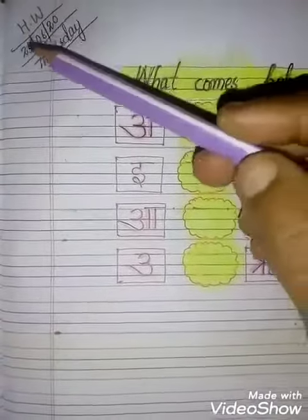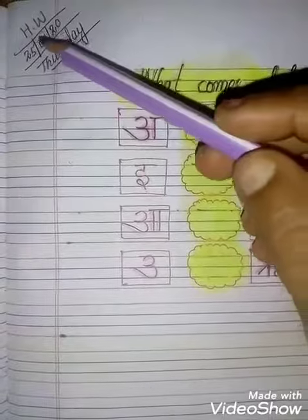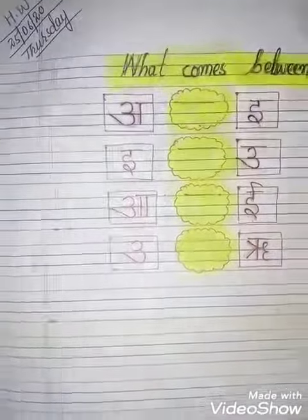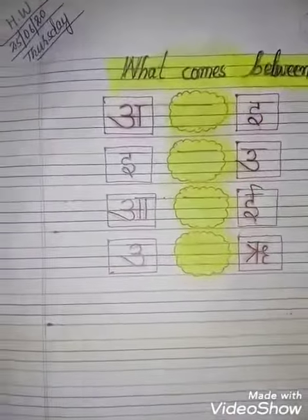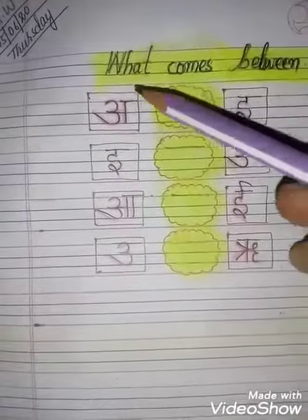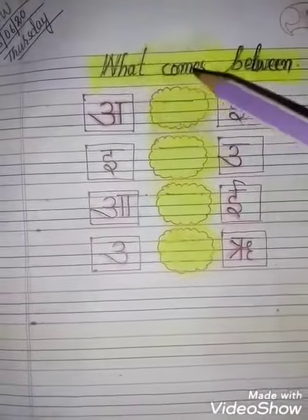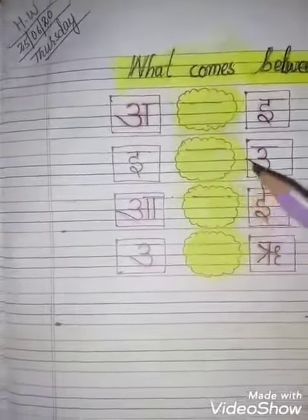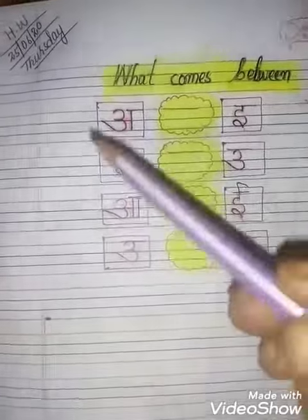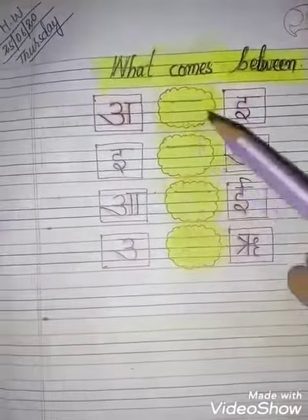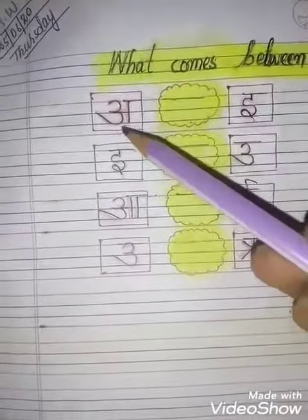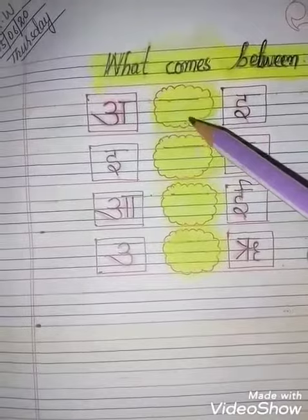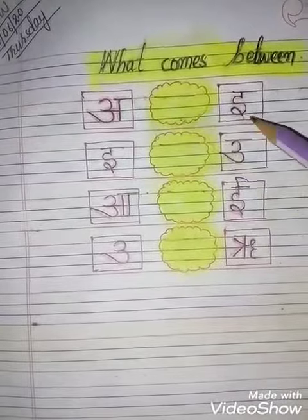Now this is your homework. You will mention here today is Thursday. Next, you will write what comes between. Before, we have done this in classwork, and now you will do it in your homework. Firstly, say this is what — I'll say another. Next, you will write it.